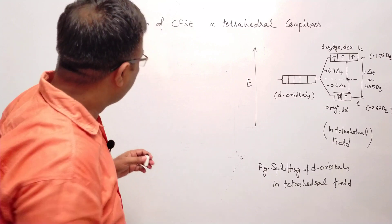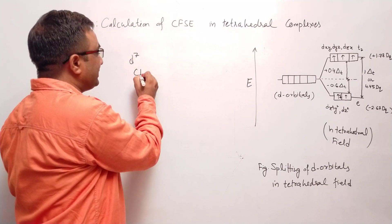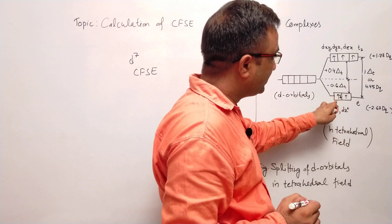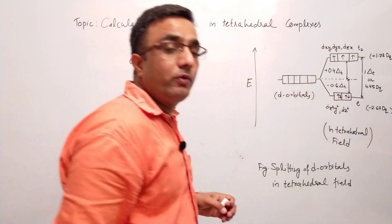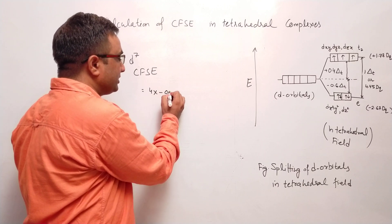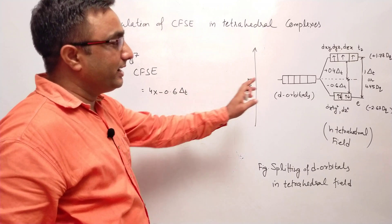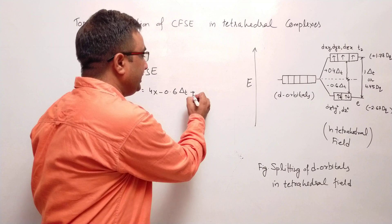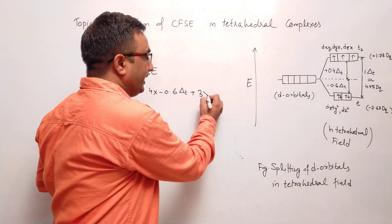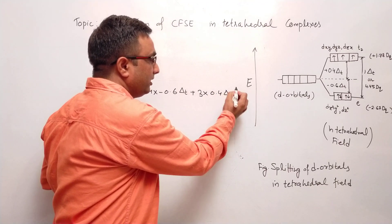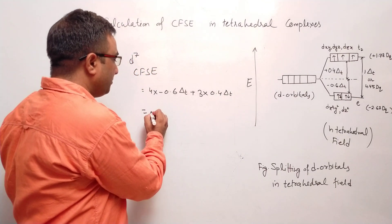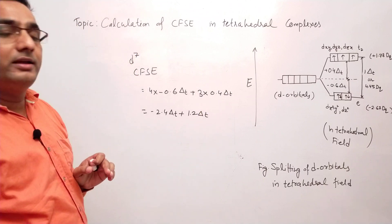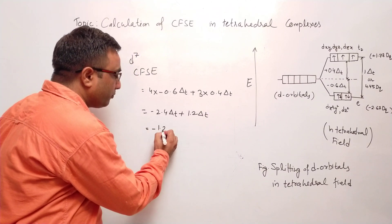Let's go for D7. CFSE: total electrons — one, two, three, four, five, six, and the seventh electron will occupy the lower energy level by pairing. CFSE will be four electrons in the lower energy level: 4 × (−0.6 delta T), and three electrons in the higher energy level: 3 × (+0.4 delta T). That gives −2.4 delta T + 1.2 delta T, which comes out to minus 1.2 delta T.